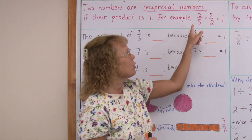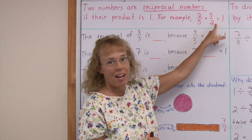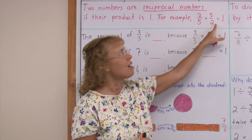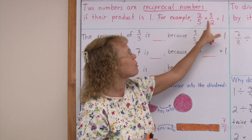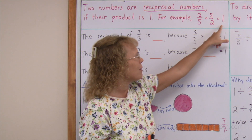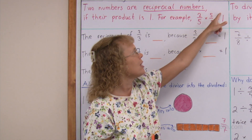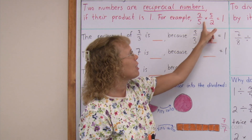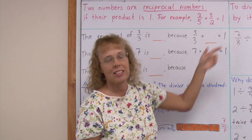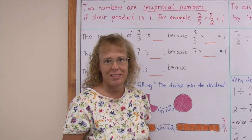For example, 2 fifths and 5 halves are reciprocal numbers, because if you multiply them, you get 1. You get 2 times 5, which is 10, and 5 times 2, which is 10. 10 divided by 10 equals 1.